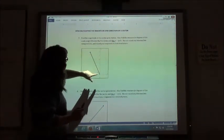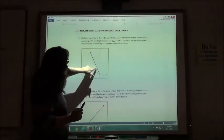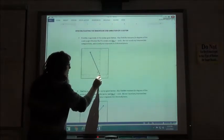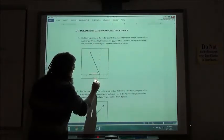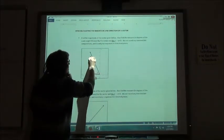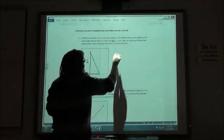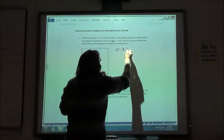So, magnitude of the vector is just how long is this vector? Well, if I draw my right triangle here, this side is negative 3, this side would be positive 6. So, my vector that I have is negative 3, 6.